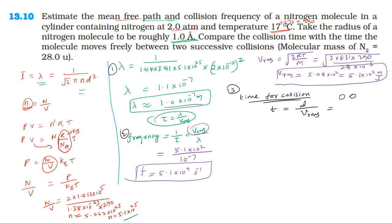The diameter is 2 into 10 power minus 10 metres. Dividing by the RMS velocity, which is 5.1 into 10 power 2 metres per second, gives the collision time. So the time for collision is equal to 10 power minus 13 seconds.